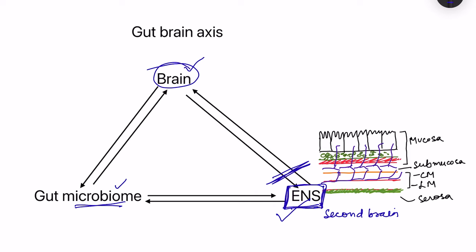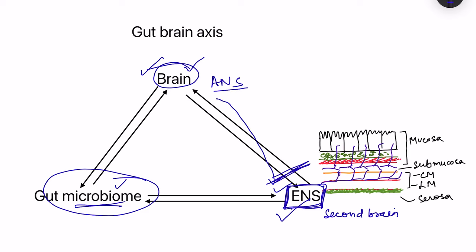The gut microbiome is responsible for the formation of many substances that interact with the enteric nervous system and also with brain neurons. From the brain, we are particularly interested in the autonomic nervous system neurons — the sympathetic and parasympathetic neurons — which influence the enteric nervous system. Additionally, sensory information going from the enteric nervous system to the higher centers influences this outflow from the brain, and molecules produced by the gut microbiome also affect this sensory information.